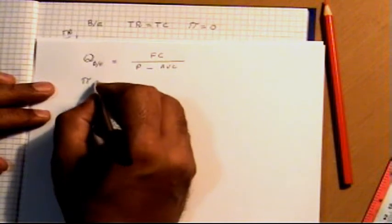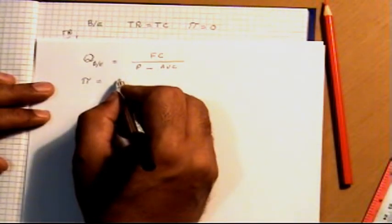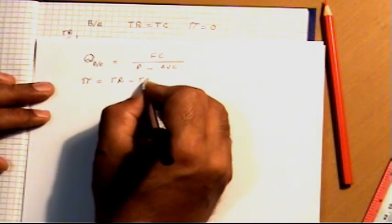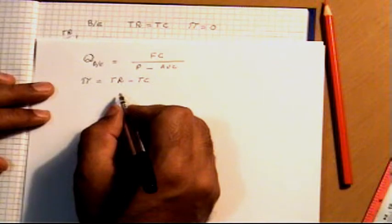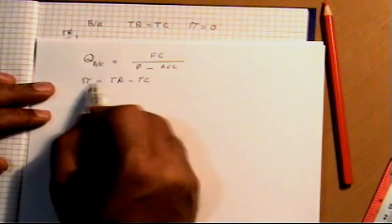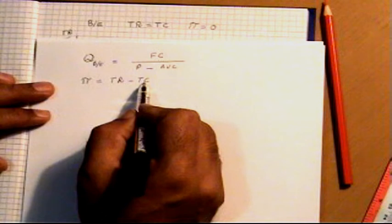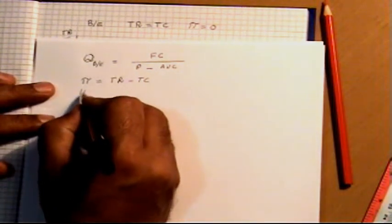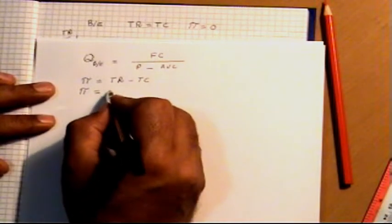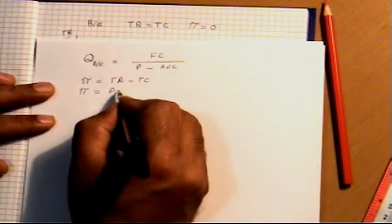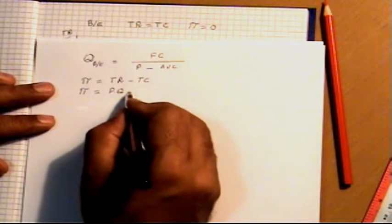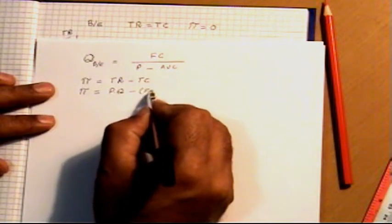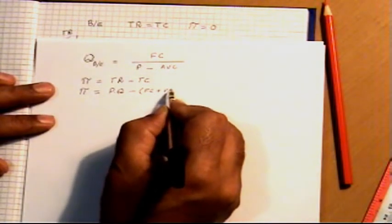Profit is equal to total revenue minus total cost. We know that profit is equal to total revenue minus total cost, and total revenue is equal to price multiplied by quantity. Total cost is equal to total fixed cost plus total variable cost.